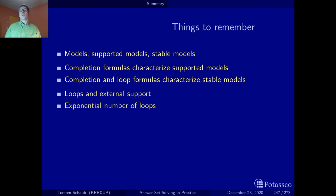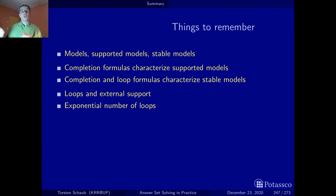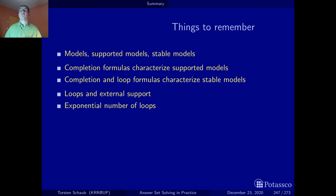The supported models we characterize through completion formulas, but their salient property is that every atom that is true in a supported model is also supported by a rule whose body is also true in this model. So there is a notion of support, but not strong enough to rule out an infinite derivation. Supported models do not guarantee that each atom has a finite derivation.